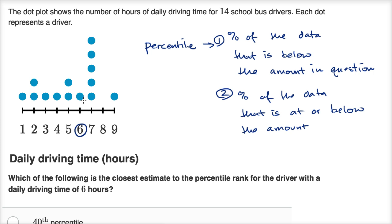So if we look at this right over here, let's just figure out how many data points, what percentage of the data points, are below six hours per day. So let's see, there are, I'm just gonna count them. One, two, three, four, five, six, seven. So seven of the 14 are below six hours.